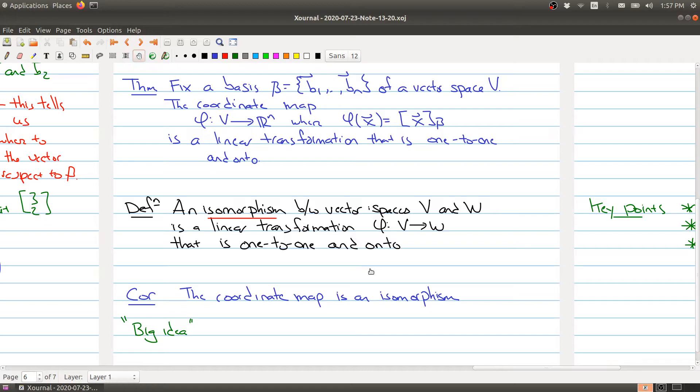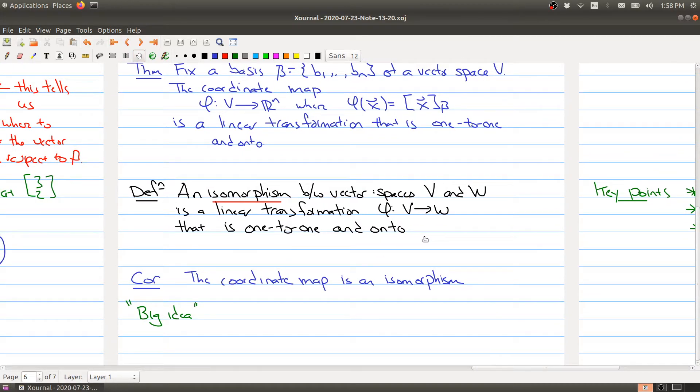Mathematicians love things that are isomorphic because really what happens when things are isomorphic is that because it's one-to-one and onto, everything on the V side is associated exactly with one thing in W and vice versa. So in some ways, they're actually the same vector space, they just have different labels. So isomorphism implies the vector spaces are the same, just have different labels, or maybe we'll call them names.